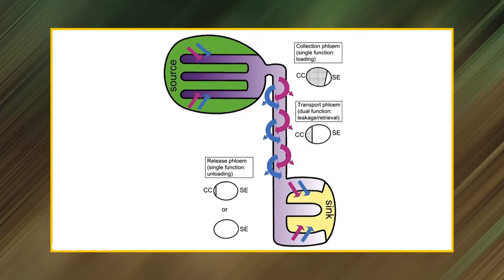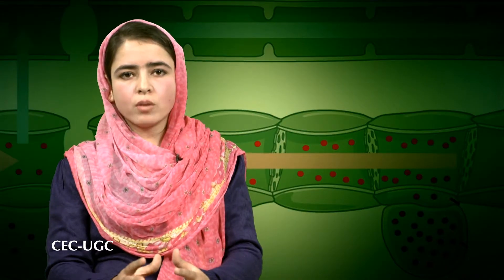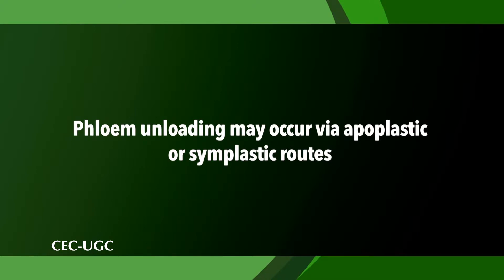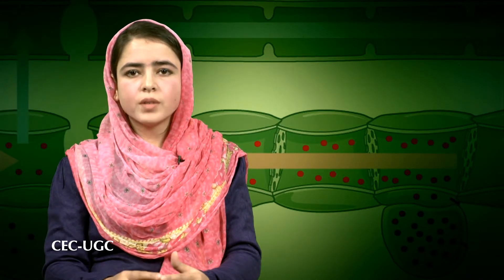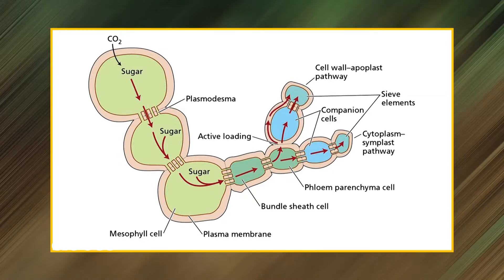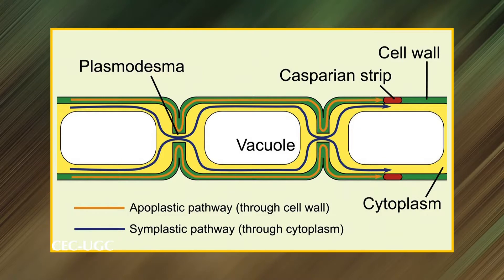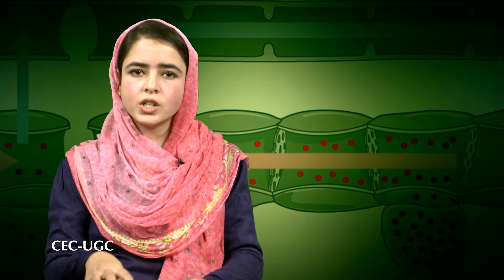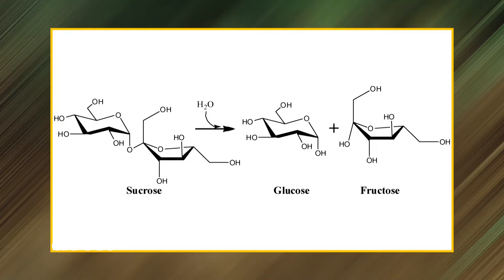Now let's see the different pathways of phloem unloading. Once photoassimilates reach their target sink, they must be unloaded from the sieve element companion cell complex into the cells of the sink tissue. Like phloem loading, phloem unloading may occur via apoplastic or symplastic routes. The pathway of phloem unloading appears to be completely symplastic in some young developing leaves and root tips, where sucrose flows via interconnecting plasmodesmata down a concentration gradient from the sieve element companion cell complex to sites of metabolism in the sink.